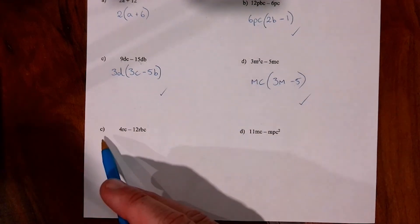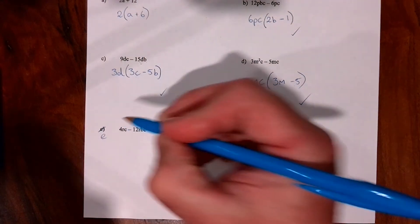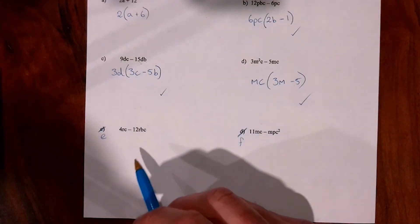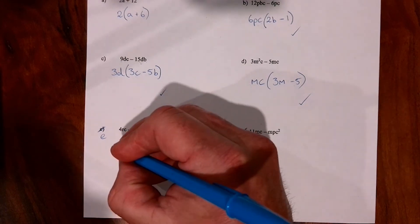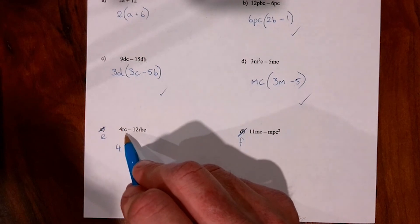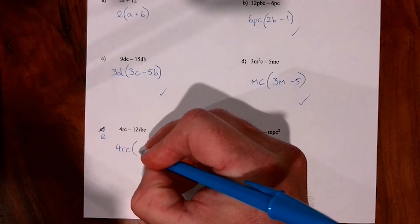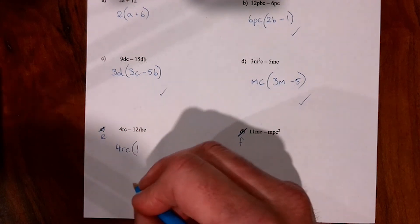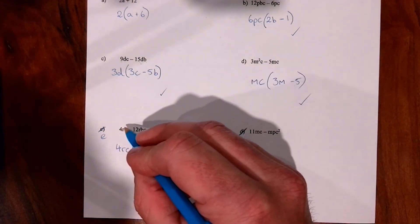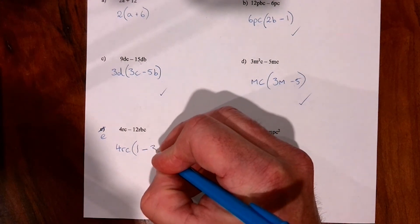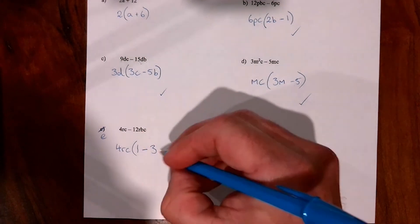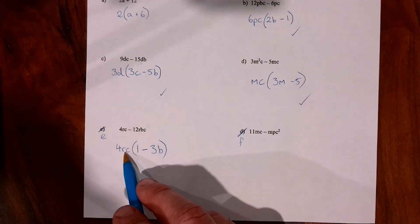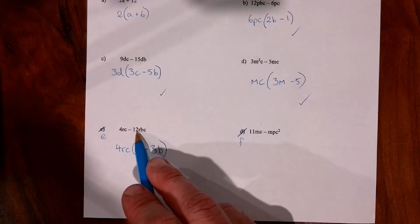Question 6e: looking for common factors of 4 and 12 — that's 4. Then we take out the common letters r and c. The first term divided by 4rc leaves 1 inside — since 4rc times 1 equals 4rc. For the second term: 4 times negative 3 makes 12, and we need the b back in, giving minus 3b. Check: 4rc times 1 makes 4rc, and 4rc times negative 3b makes negative 12rbc. Correct.